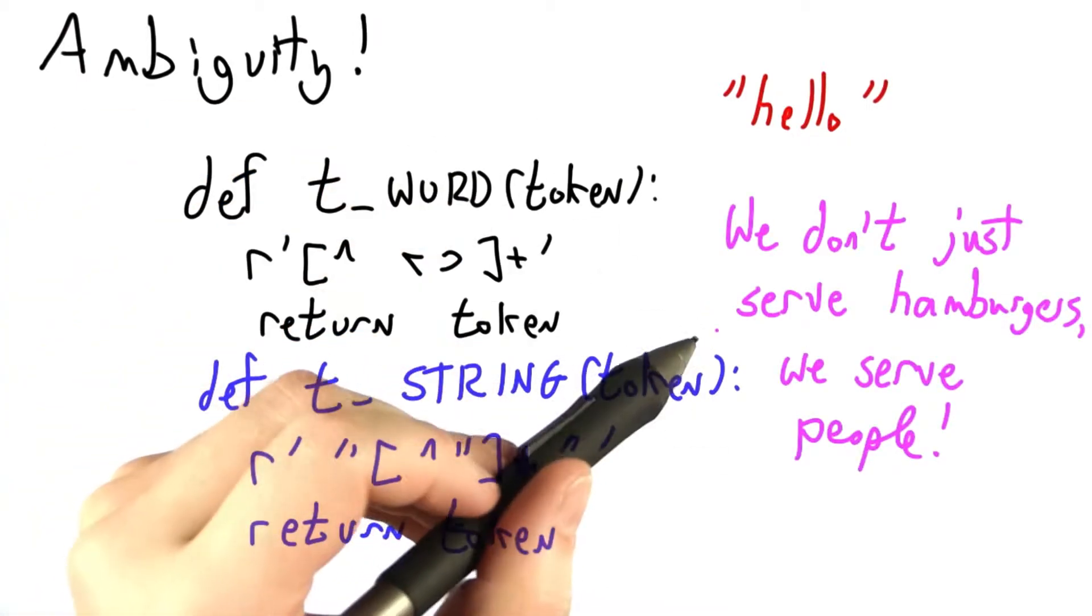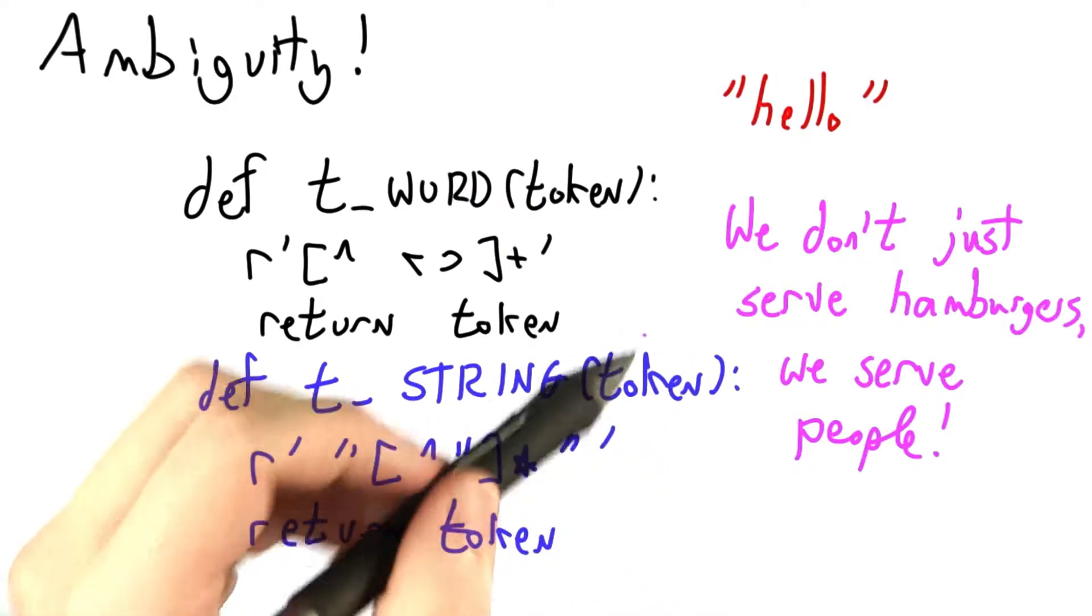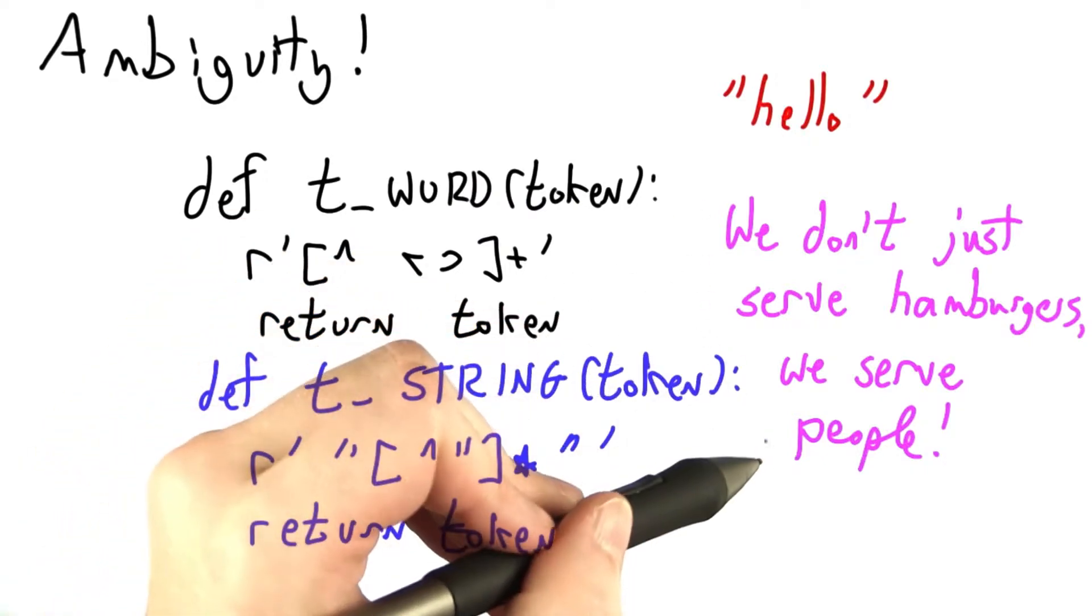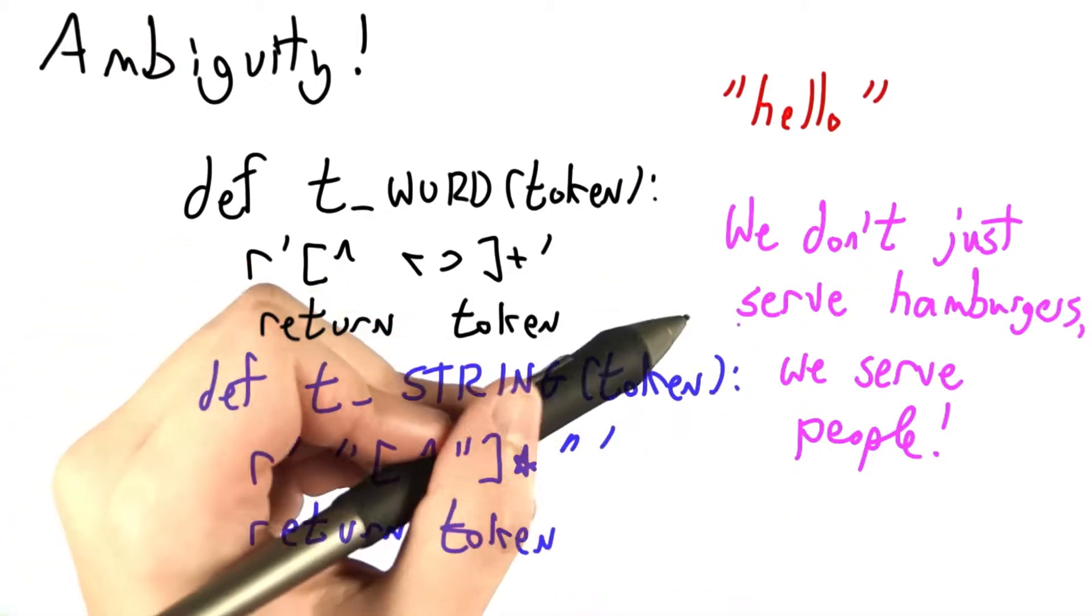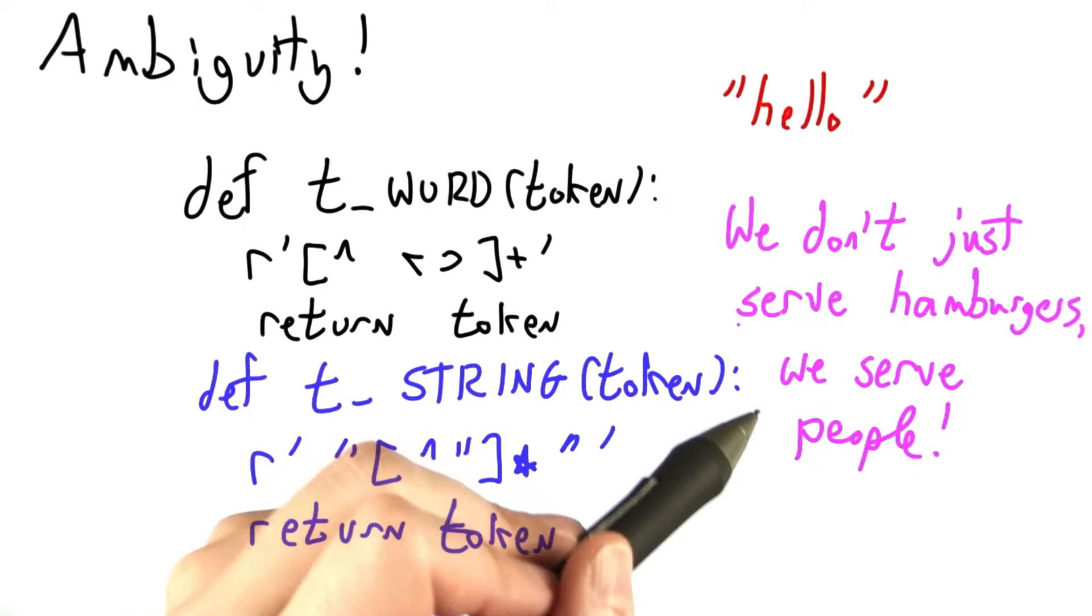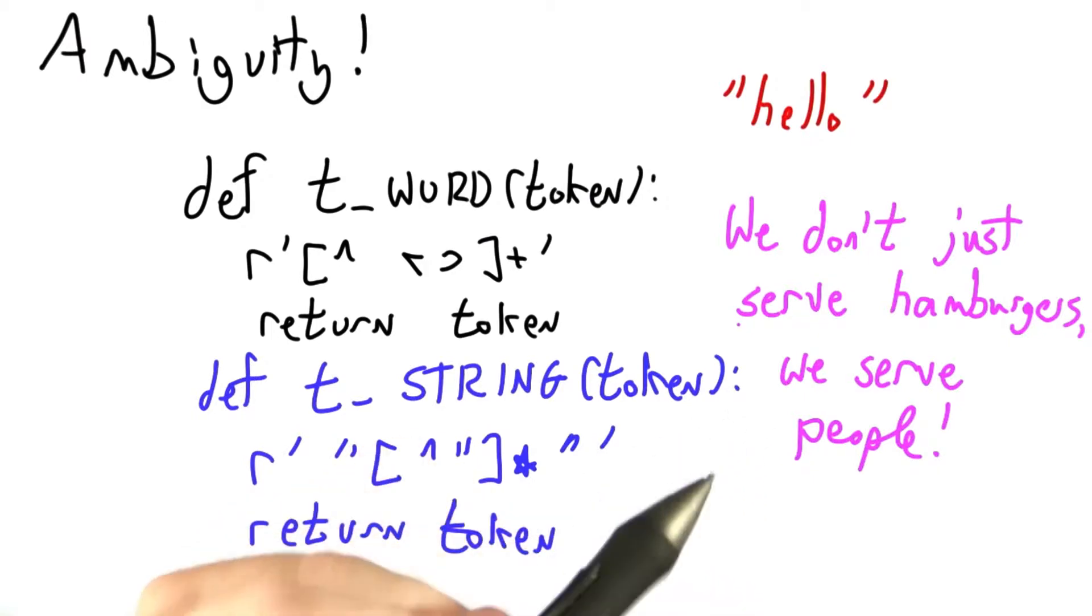This is a problem not just with computer languages, but also with natural languages. As the hypothetical owner of this restaurant would notice, we don't just serve hamburgers, we serve people, could be interpreted the wrong way. Presumably those hamburgers are soylent green flavored.